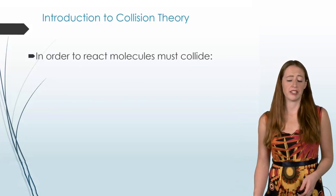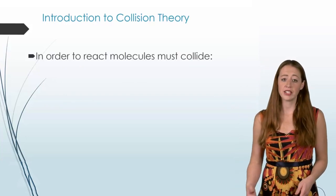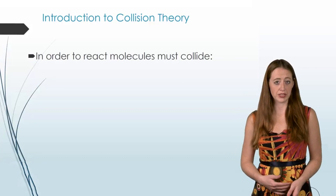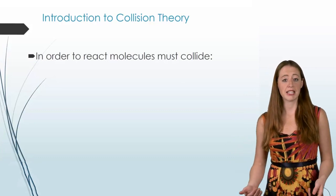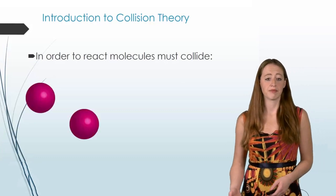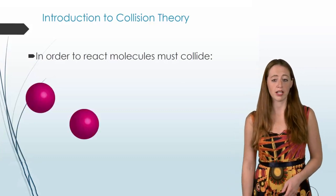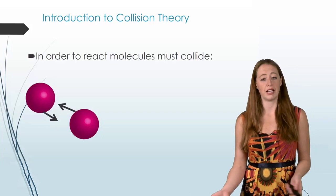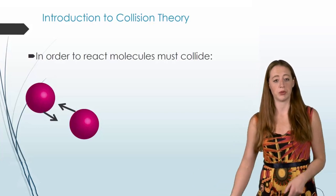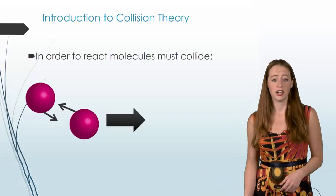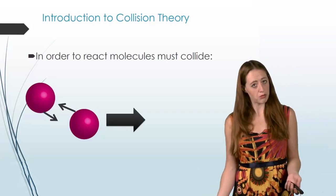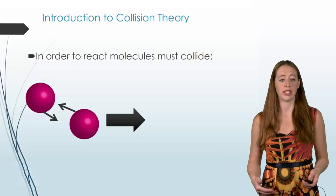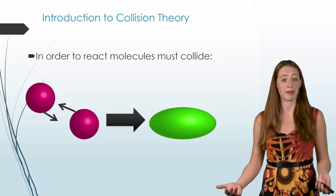Collision Theory says that in order to react, molecules must collide. So if we have two molecules and we want them to do something, we must allow them to collide into each other to form a new molecule, or react in some way and rearrange to do something.